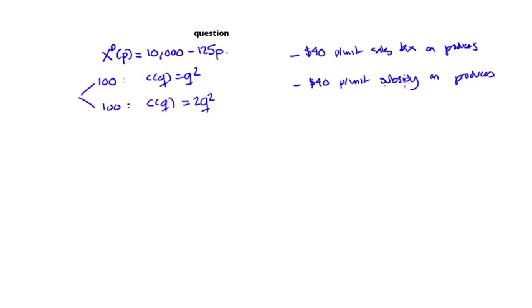In other words, in this second policy every time they produce and sell one unit, they get forty dollars from the government. Question: which of the two policies leads to a bigger deadweight loss?